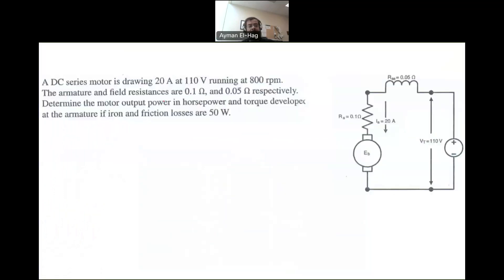In this question, we have a series motor, meaning that the field winding and the armature winding are connected in series. The motor is drawing 20 amps, which is IA or IF, because as I said, both the field winding and the armature winding are connected in series.